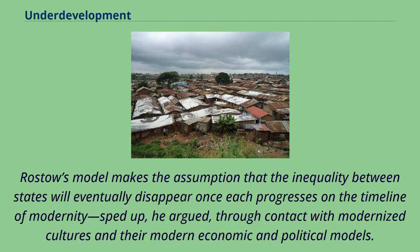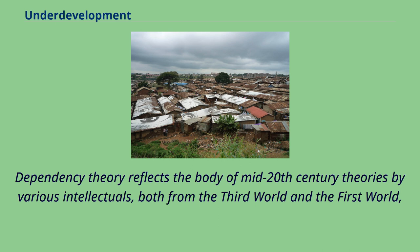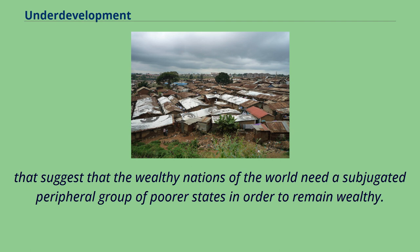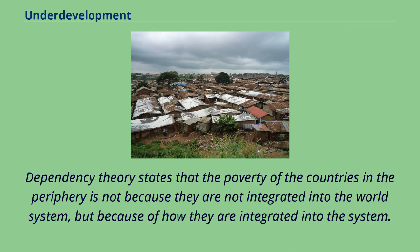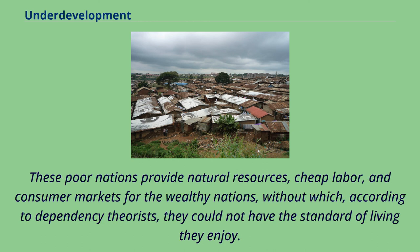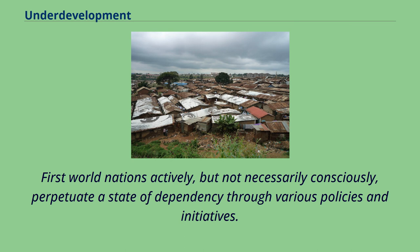Dependency theory reflects the body of mid-20th century theories by various intellectuals — both from the Third World and the First World — that suggests that wealthy nations need a subjugated peripheral group of poorer states in order to remain wealthy. Dependency theory states that the poverty of countries in the periphery is not because they are not integrated into the world system, but because of how they are integrated into the system. These poor nations provide natural resources, cheap labor, and consumer markets for wealthy nations, without which, according to dependency theorists, those wealthy nations could not have the standard of living they enjoy.